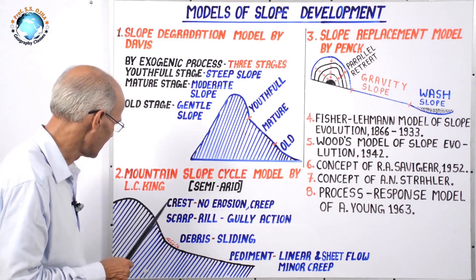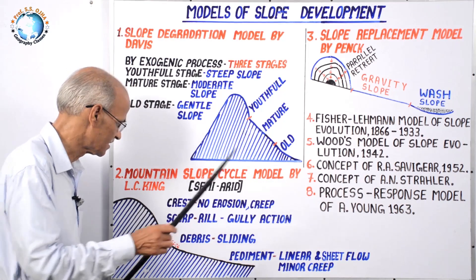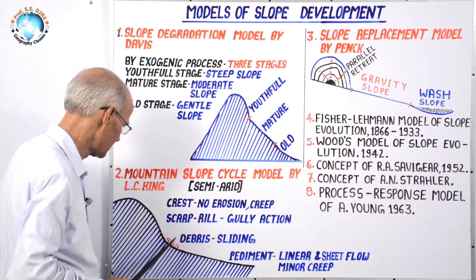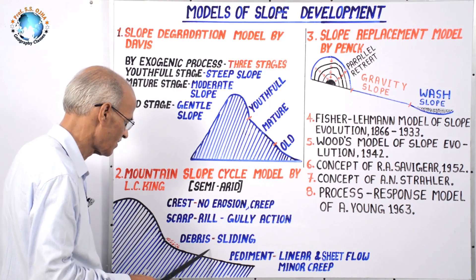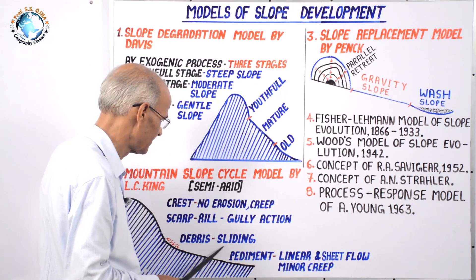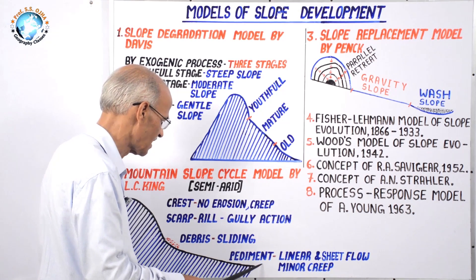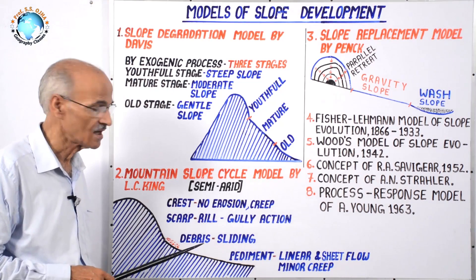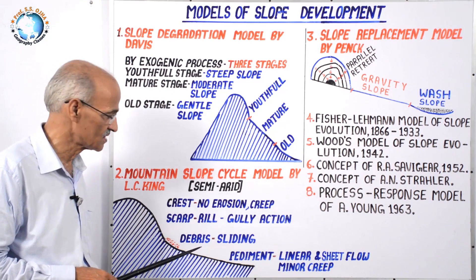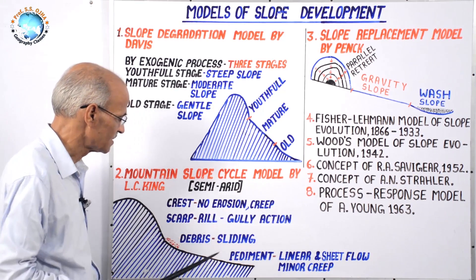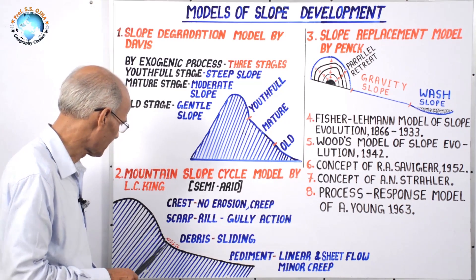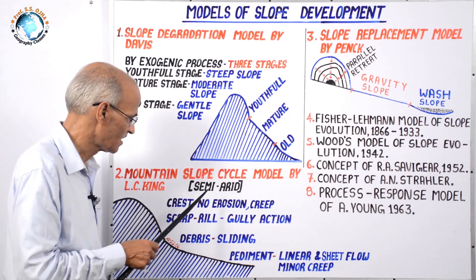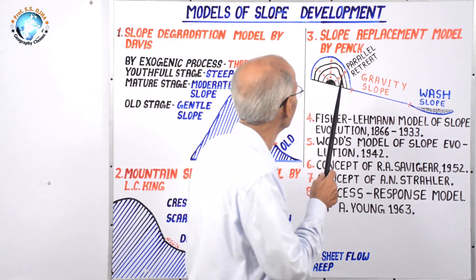In L.C. King's model, the land is eroded by arid, semi-arid, and fluvial processes, transported along the slope by fluvial and aeolian processes, and deposited in low-lying concave slope areas. Ultimately, as in Davis's model, this culminates into an erosional plane — the upper part is erosional and the lower part is depositional.